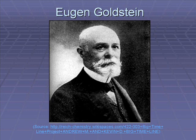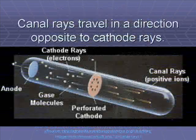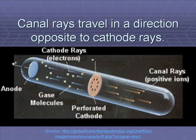In 1886, Goldstein was also observing a cathode ray tube and found rays traveling in the opposite direction to the cathode rays. He called these rays canal rays. The canal rays were actually protons.